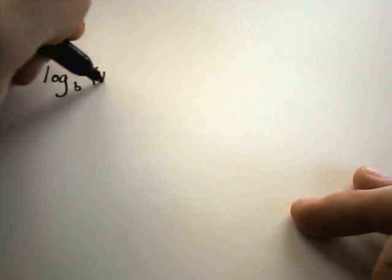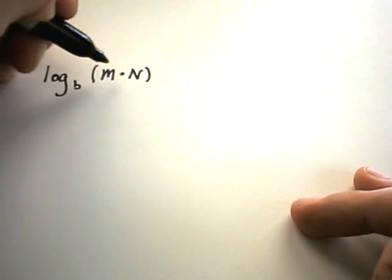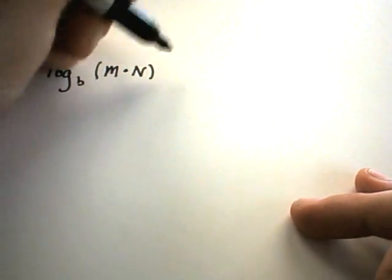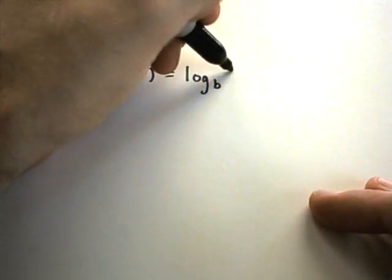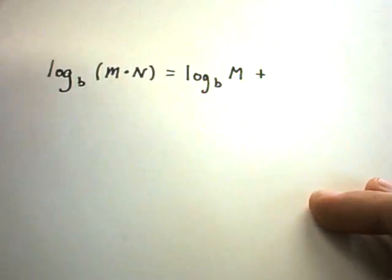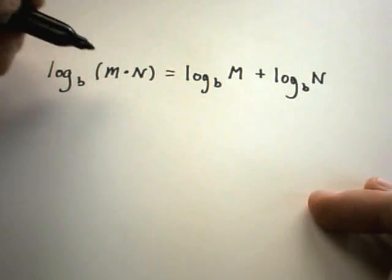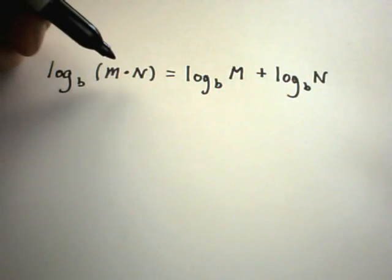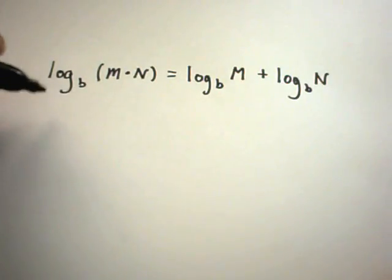Suppose we have a logarithm. We'll just write it log base b generically. And, suppose we have a product on the inside, m times n. And, it doesn't have to be just single values. m and n could be very complicated quantities. There's a rule that says, if you have products, it turns into addition. You would think, maybe your natural guess would be, well, products should turn into products. But, well, not quite this time. But, I remember my little mnemonic device is that products become pluses, is the way I remember this one.